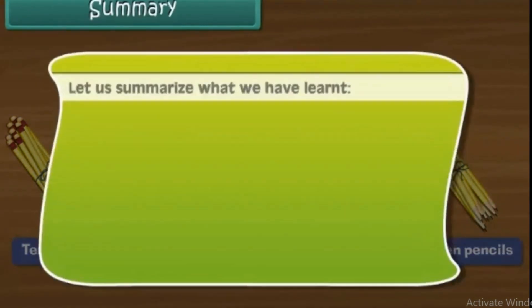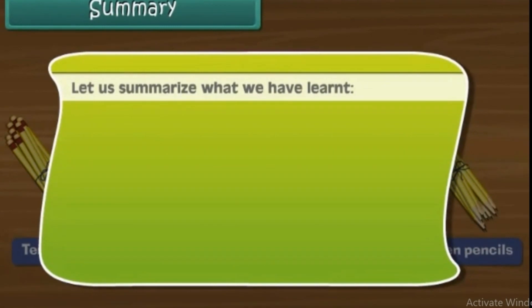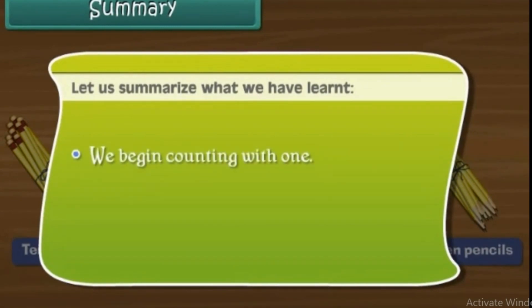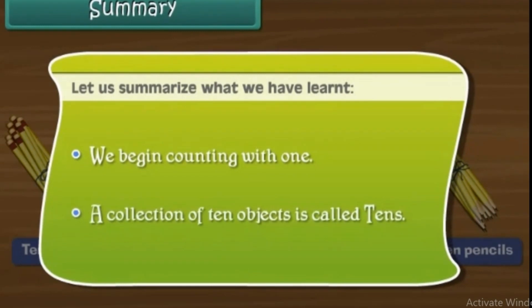Summary. Let us summarize what we have learned. We begin counting with 1. A collection of 10 objects is called tens.